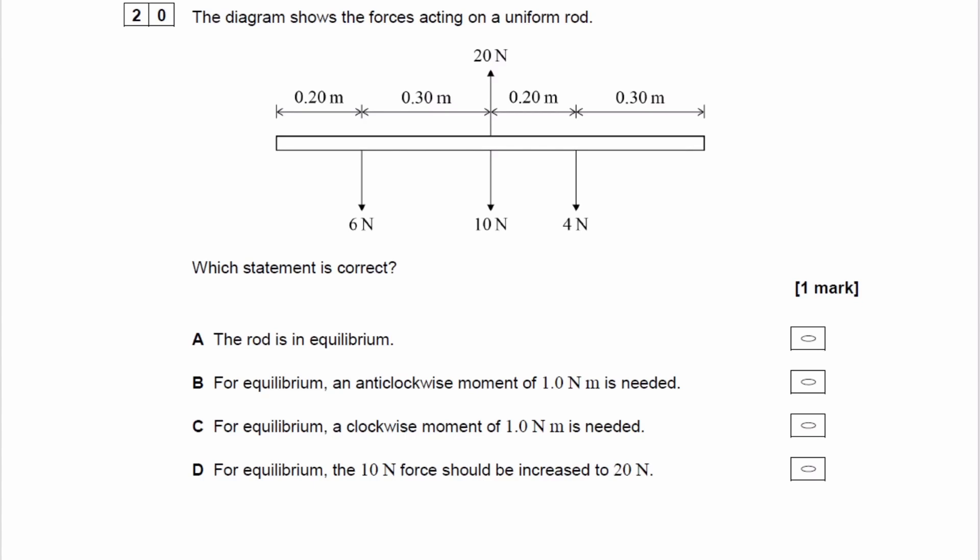The diagram shows the forces acting on a uniform rod. So we have four forces: 20, 6, 10, and 4. And then we're trying to see what statement is correct.